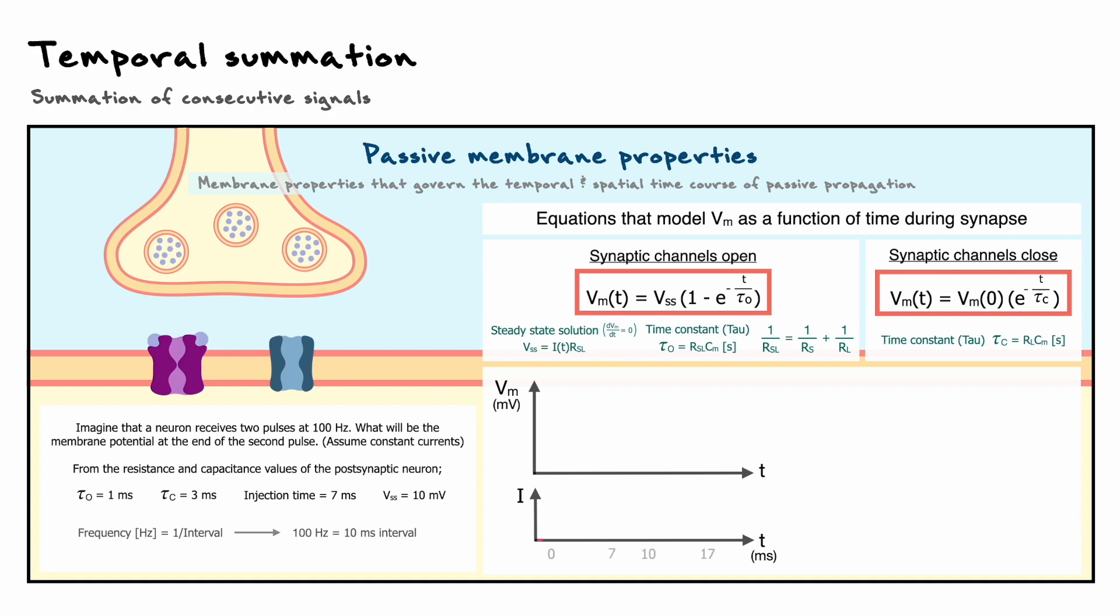In our problem, a frequency of 100 Hz means that the interval between each pulse is therefore 10 ms. With this information, we can see that the first pulse lasts 7 ms, and 3 ms after its end, another one is fired for 7 ms again. In the plot of the membrane potential, we can also plot the steady state potential which follows the same shape as the current. Now that the time frame is established, we can use our exponential equations to find the final membrane potential.